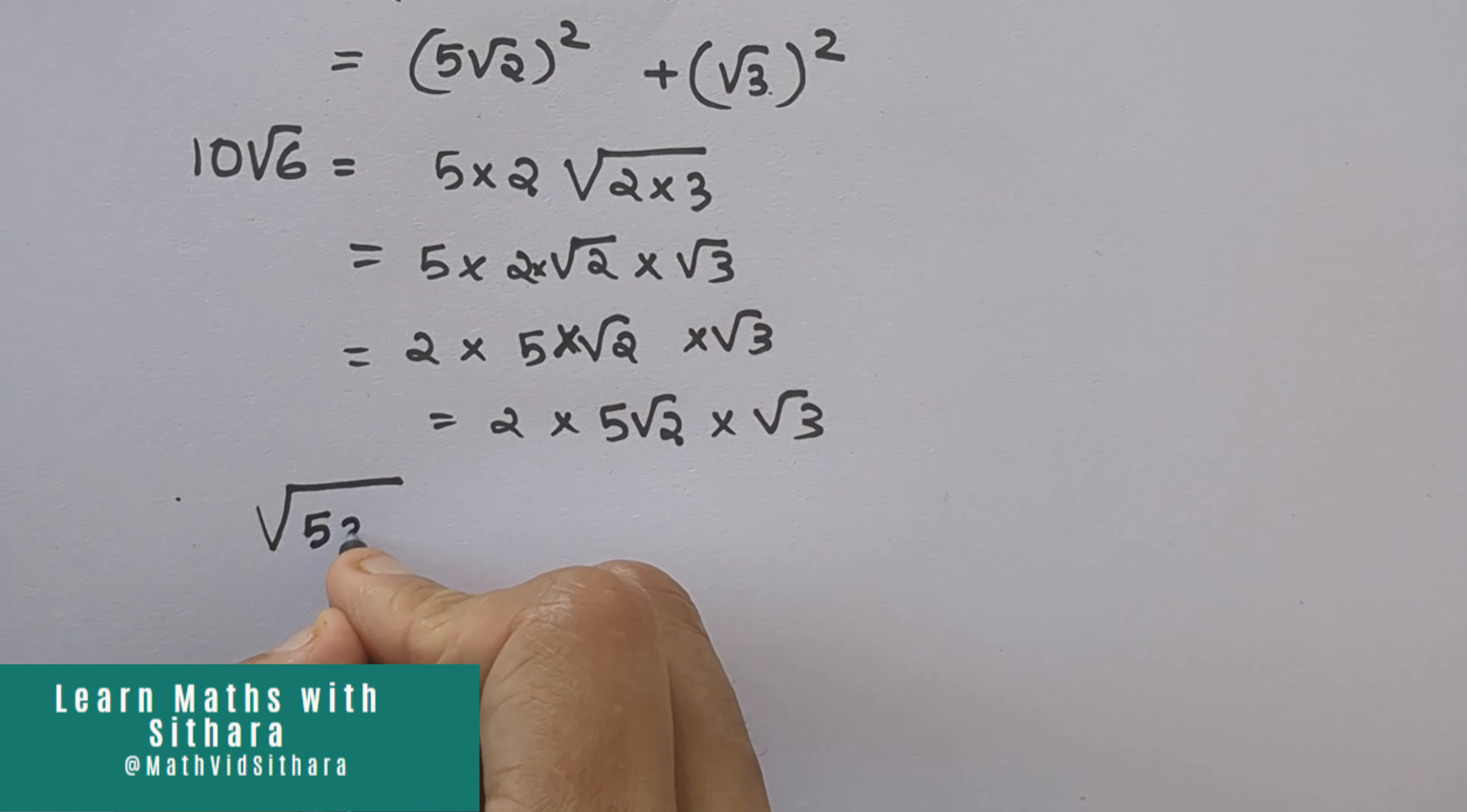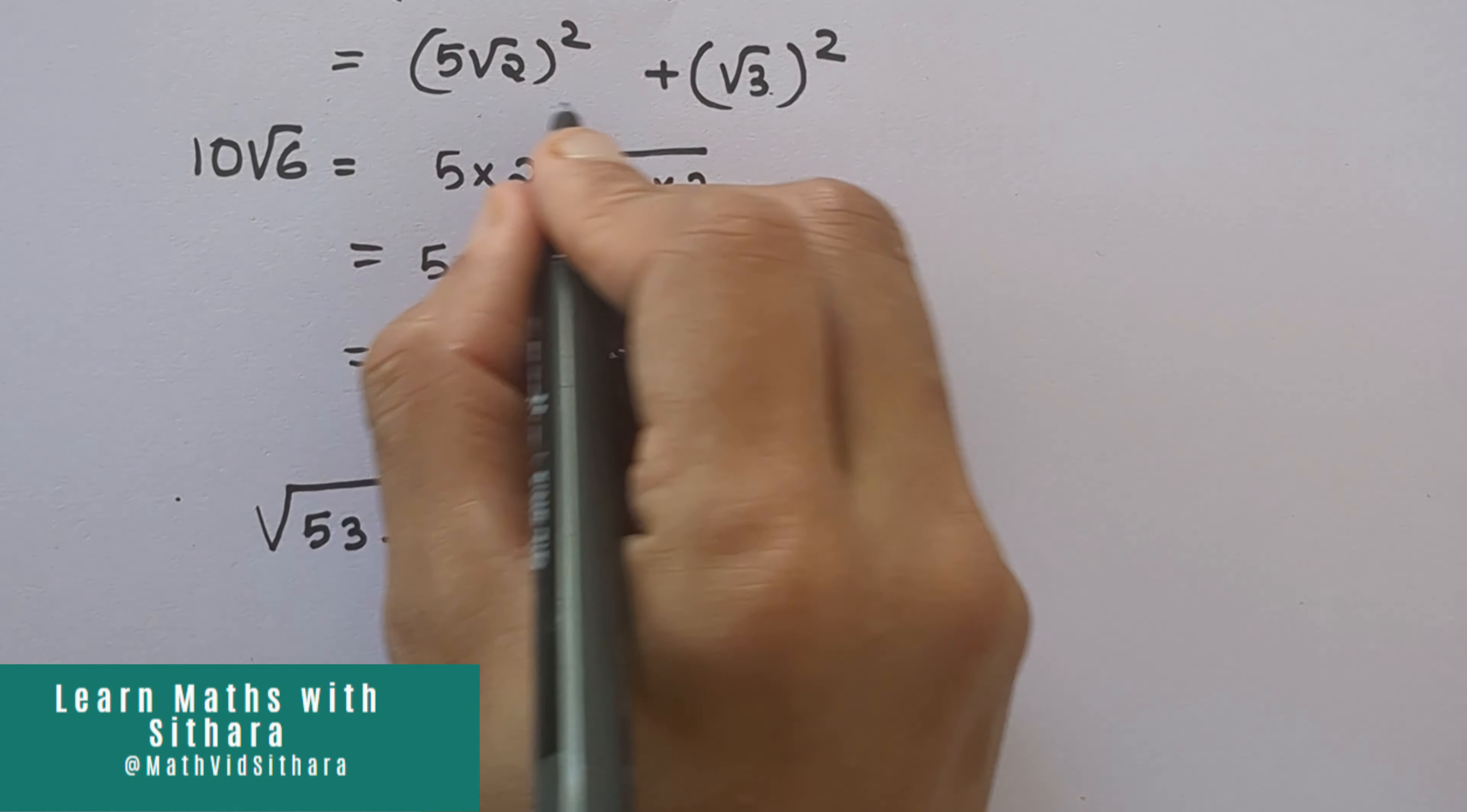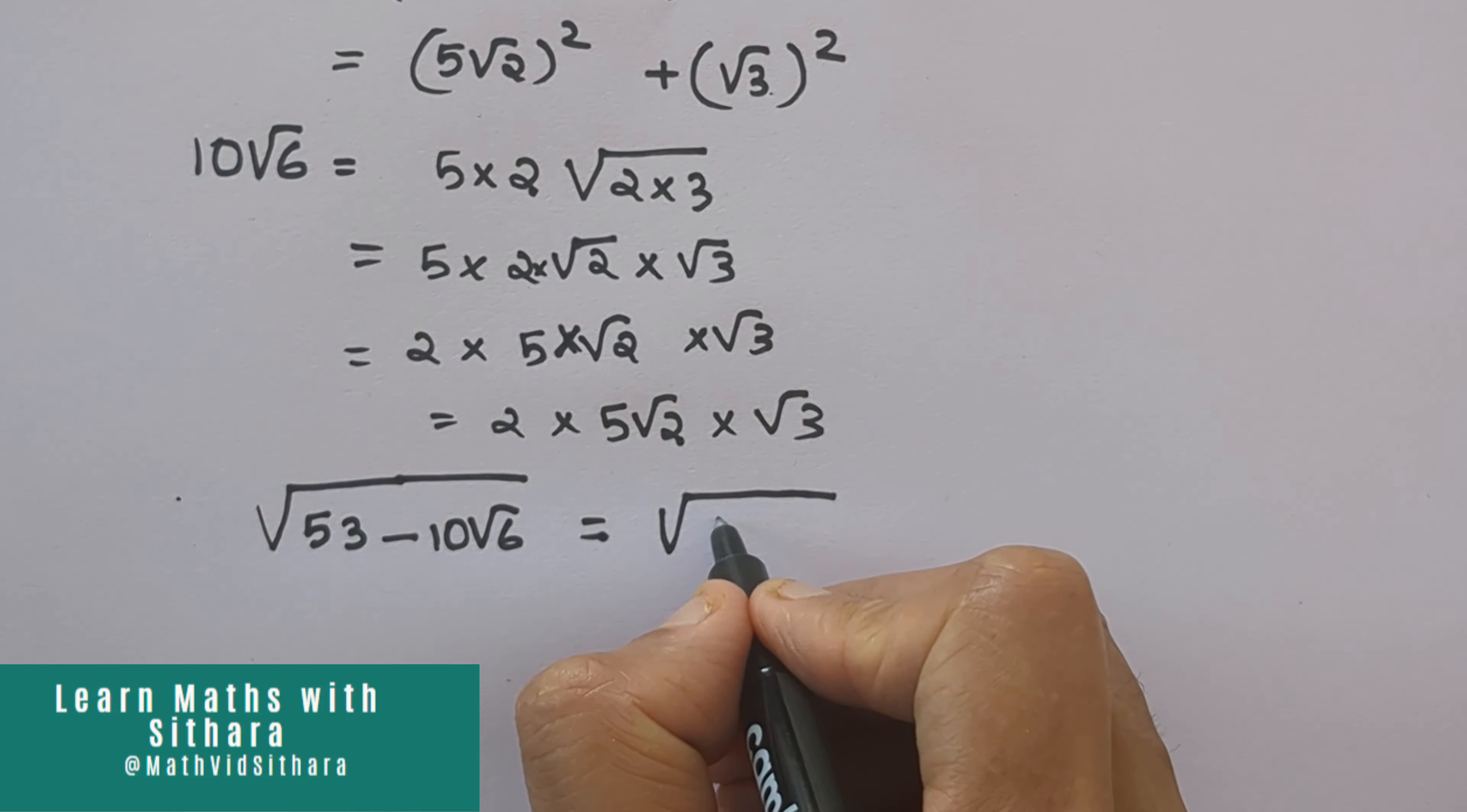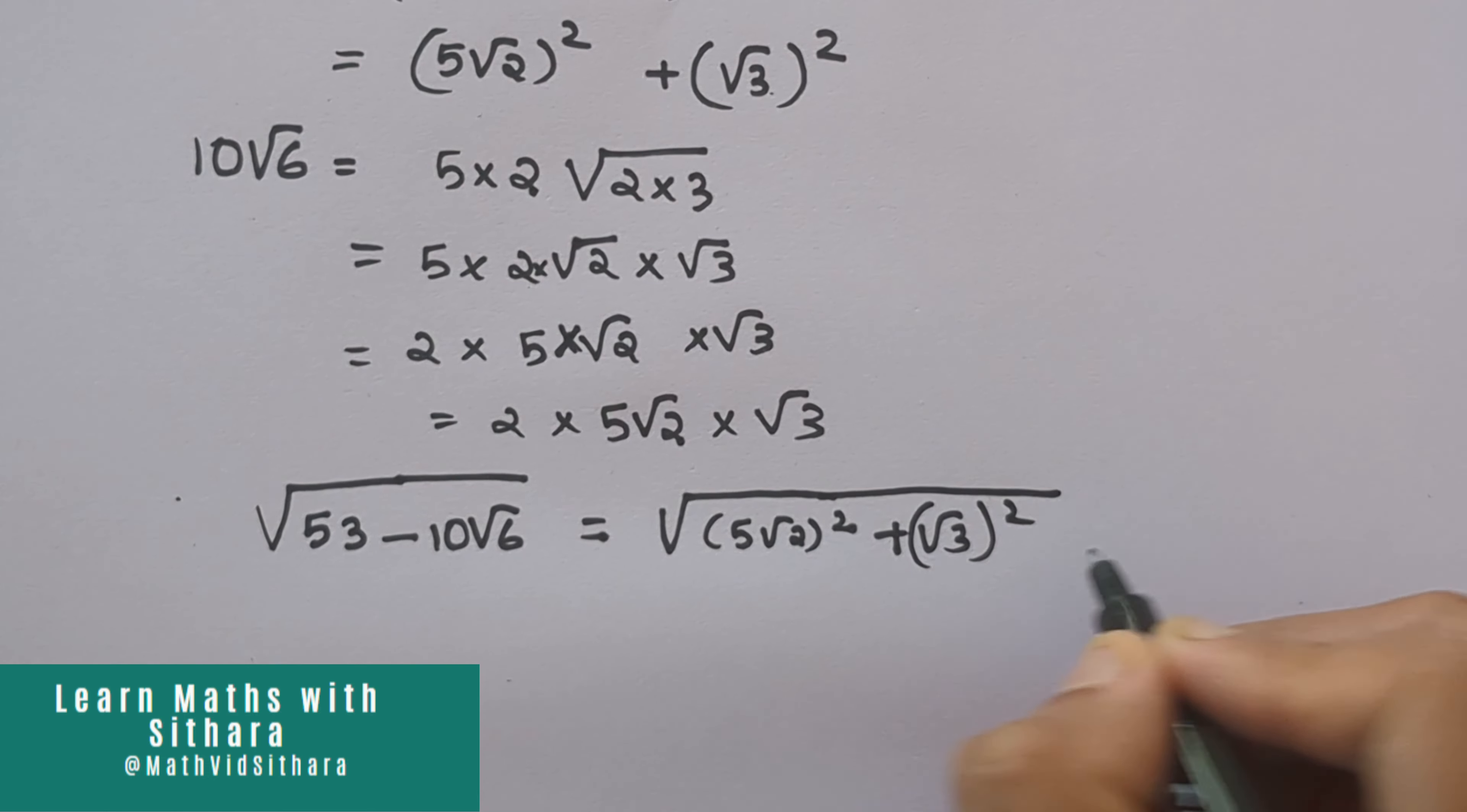Therefore, root of 53 minus 10 root 6 equals - we can apply our simplified terms here. That is, for 53 we can put 5 root 2 the whole square plus root 3 the whole square, minus for 10 root 6 we can put 2 into 5 root 2 into root 3.